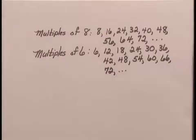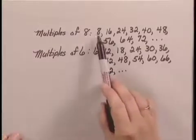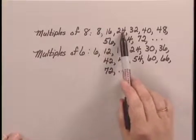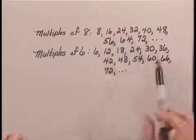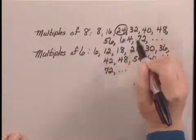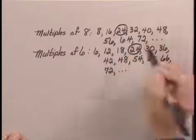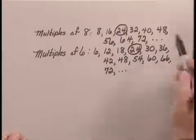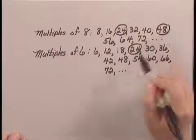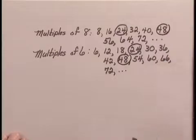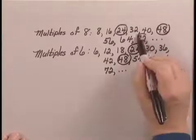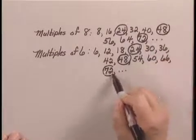Now, what we're looking for is a number that's common to both lists. It's a multiple of 8, and it's a multiple of 6. Looking across, I see that 24 is a multiple of 8, and it's a multiple of 6. Also, 48 is a multiple of 8, and a multiple of 6. Also, 72 is a multiple of 8, and a multiple of 6.